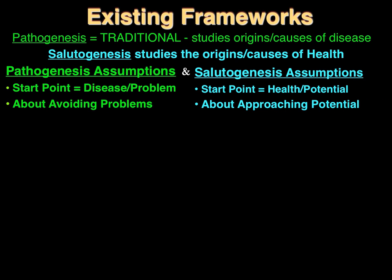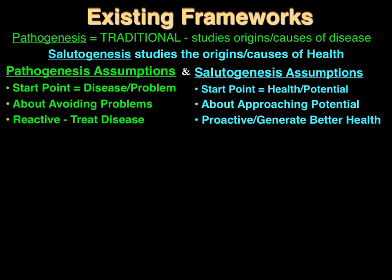Pathogenesis is about how to avoid a problem, whereas salutogenesis is about how we can approach and reach our potentials. Pathogenesis is reactive — it's either reacting to disease or the possibility of disease to keep it from happening. Salutogenesis, on the other hand, is very proactive in that it's trying to generate a new outcome that doesn't exist right now and couldn't exist the way we're currently doing things.